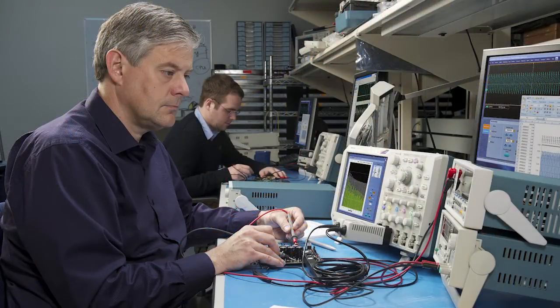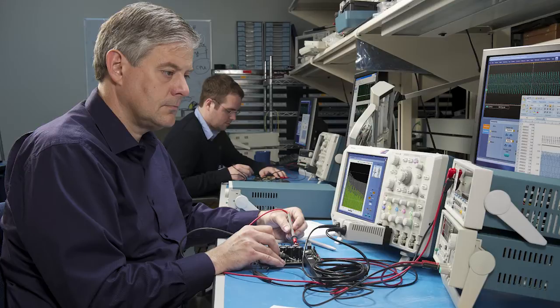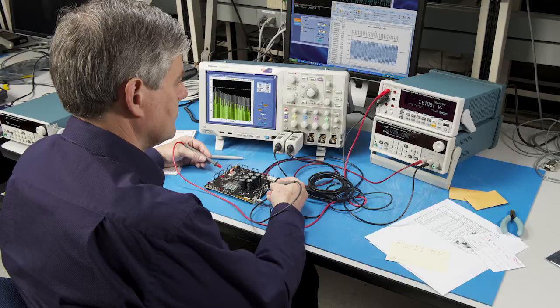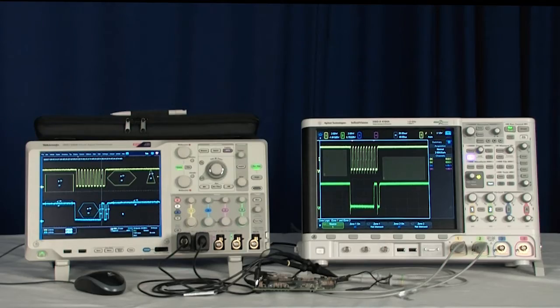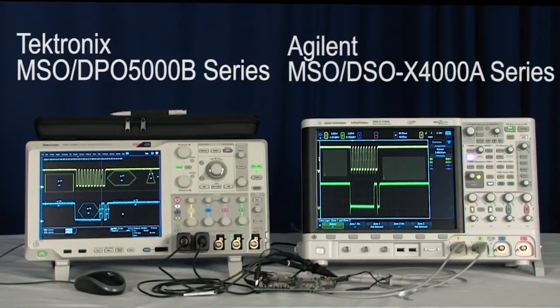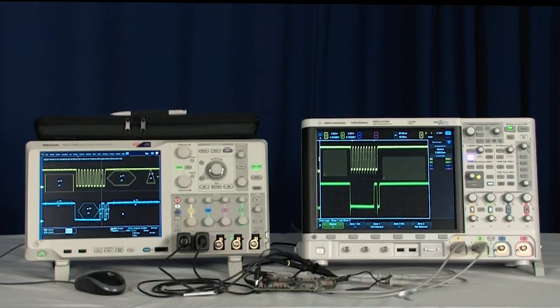But which oscilloscope should you buy? Selecting a midrange oscilloscope based on the datasheet can be difficult since many appear to have the same specifications and comparable features. This short video will provide a quick overview and comparison of the Tektronix MSO-DPO5000 series and the Agilent MSO-DSO-X4000A series oscilloscopes.